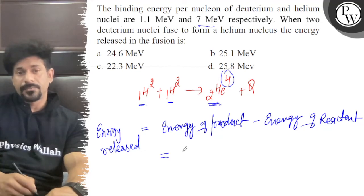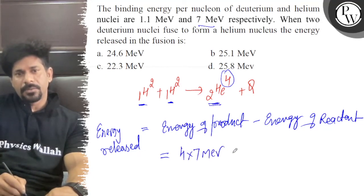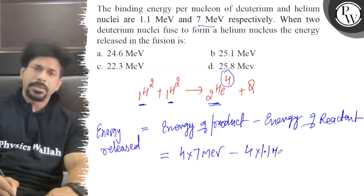So per nucleon is 7. So of 4 nucleons, it will be multiplied by 7 MeV minus 4 multiplied by 1.1 MeV.